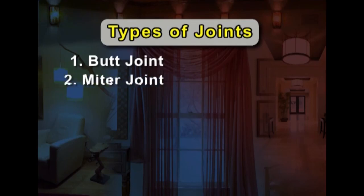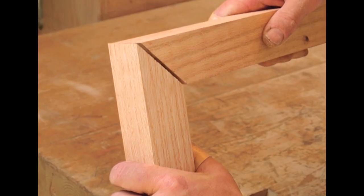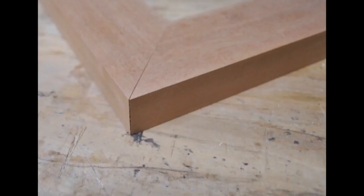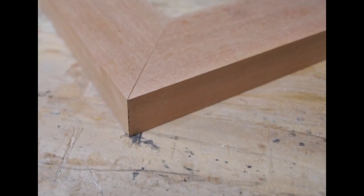The second one is the miter joint. A miter joint is a joint made by beveling each of two parts to be joined, usually at a 45-degree angle to form a corner, usually a 90-degree angle. It is often used in making picture frames.